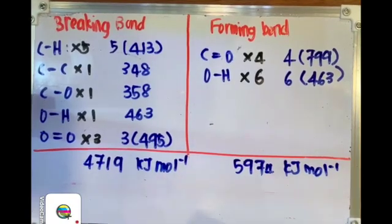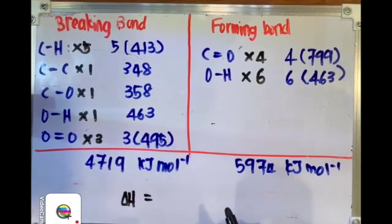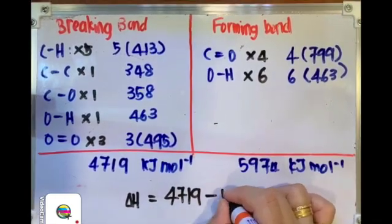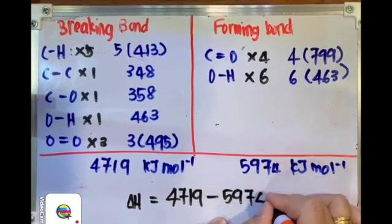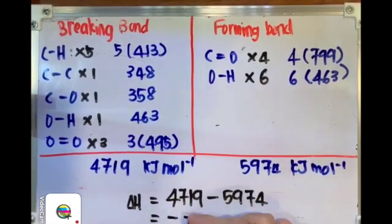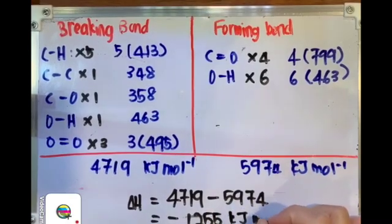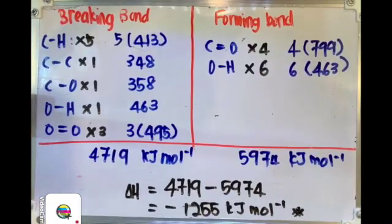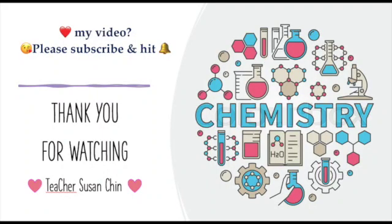Last step: to calculate delta H, the heat of combustion, we take the total energy needed to break the bonds minus the total energy released during formation of chemical bonds. The final answer is negative 1,255 kilojoules per mole. This means the combustion of ethanol in excess oxygen is an exothermic reaction. This is the end of the sharing for HOTS question number 2 involving heat change calculation for the complete combustion of ethanol. Please subscribe and hit the bell for more notifications. Thank you.